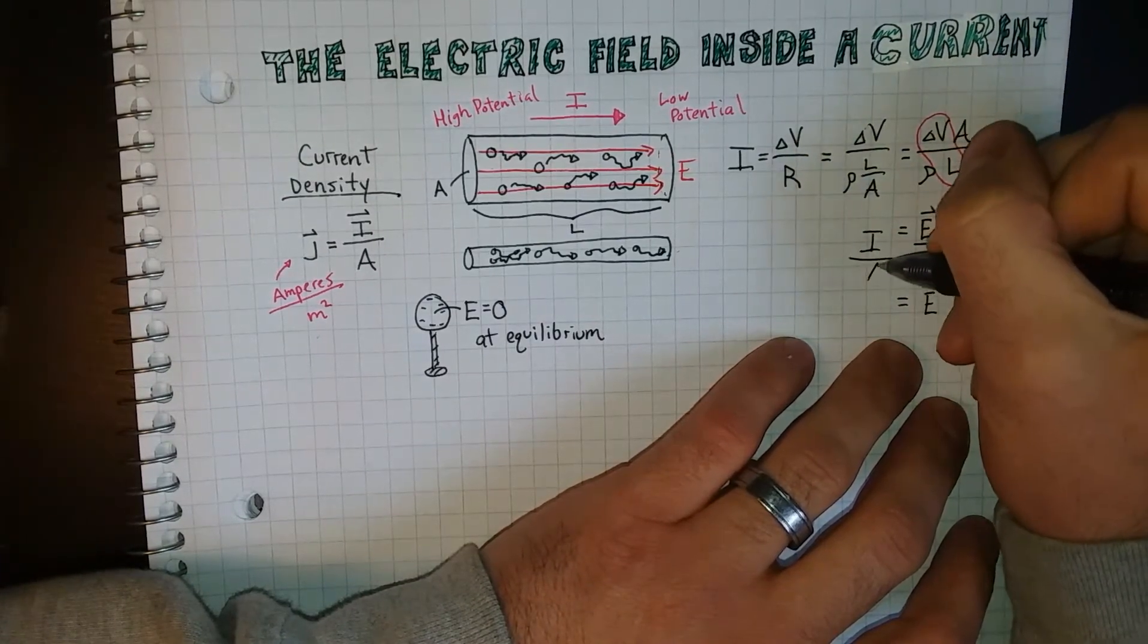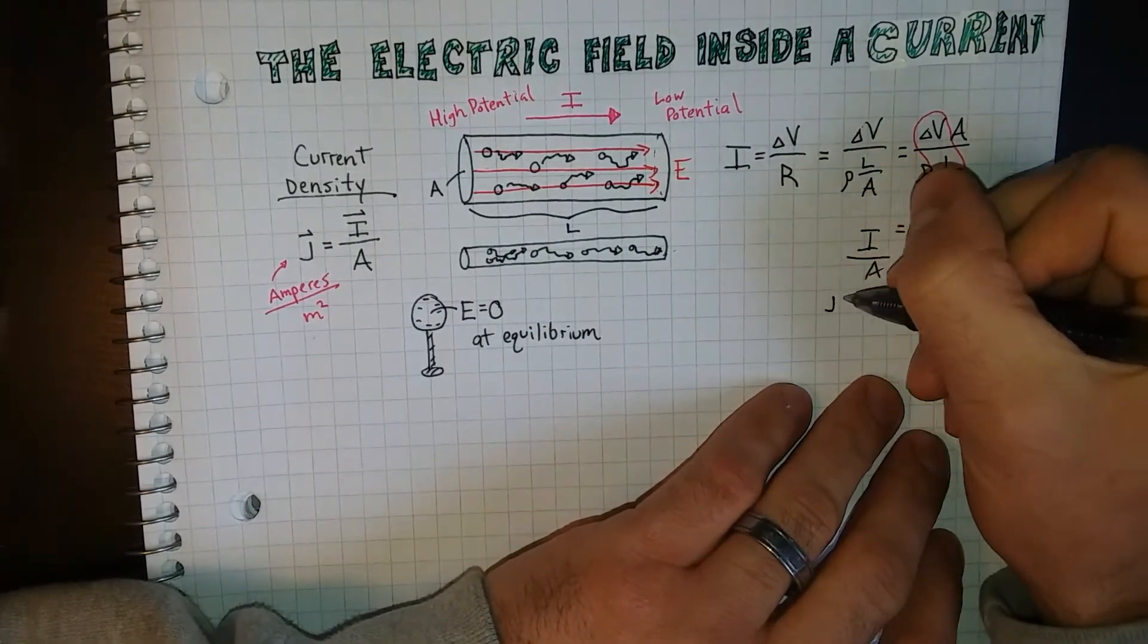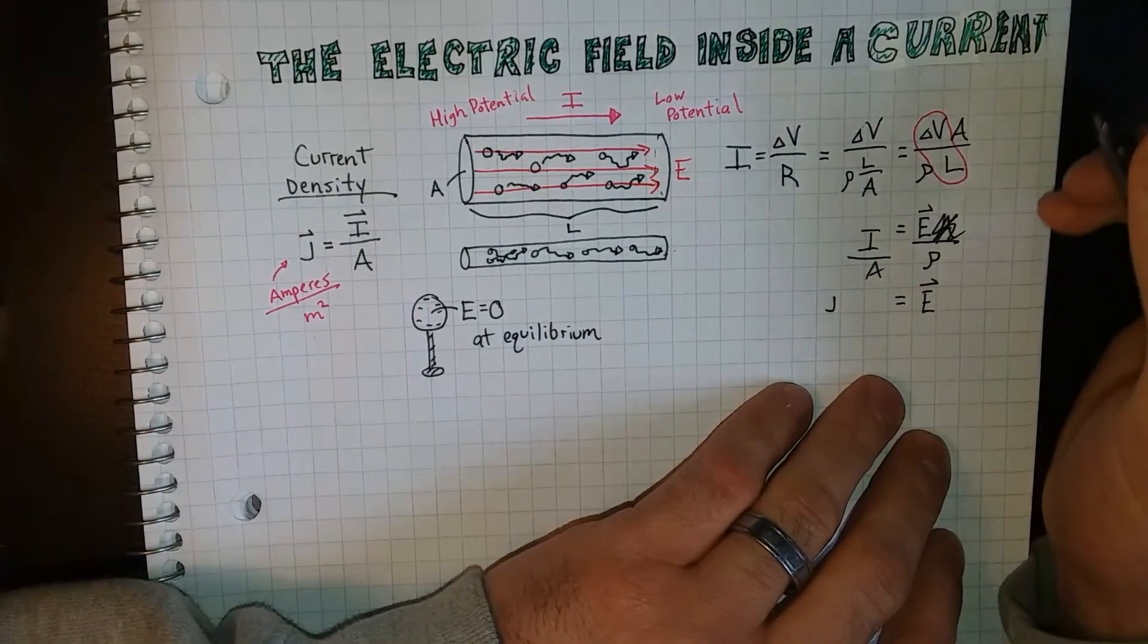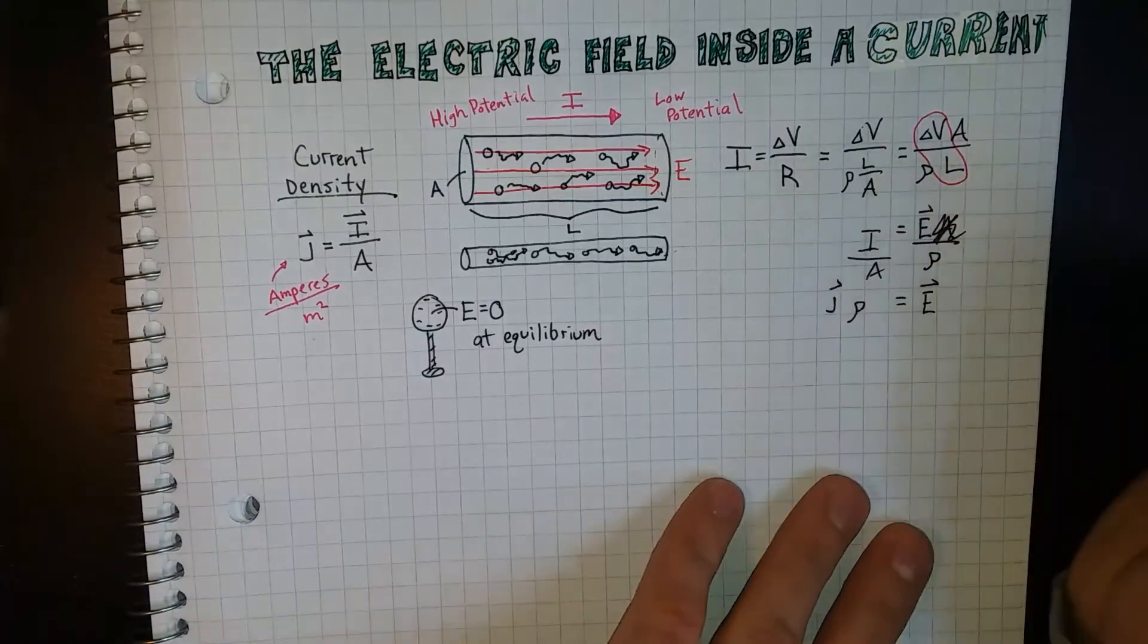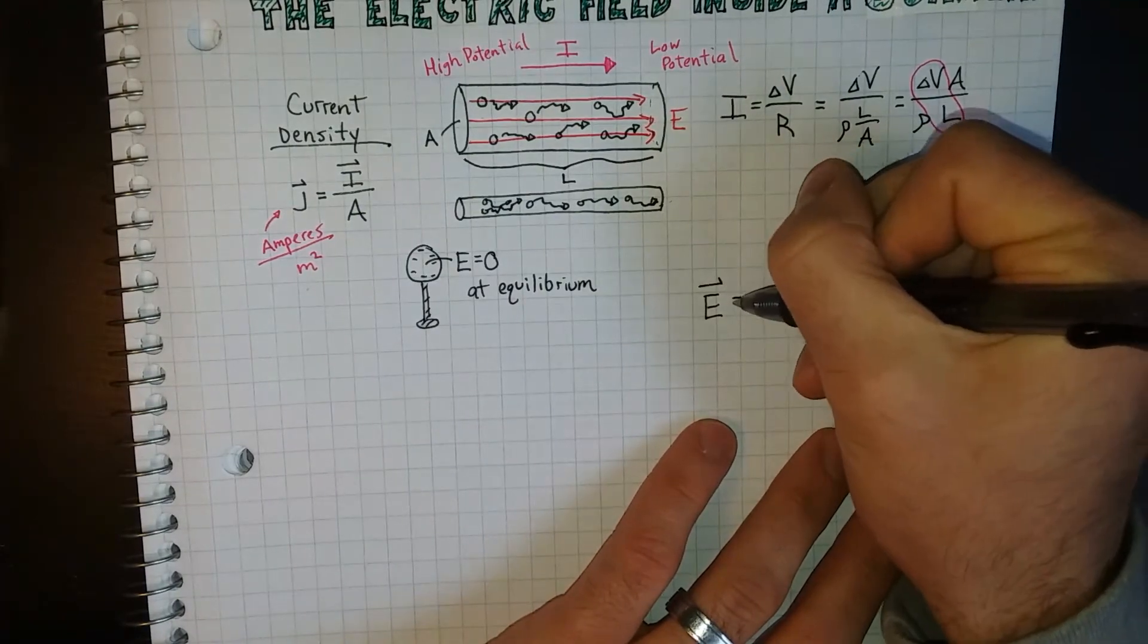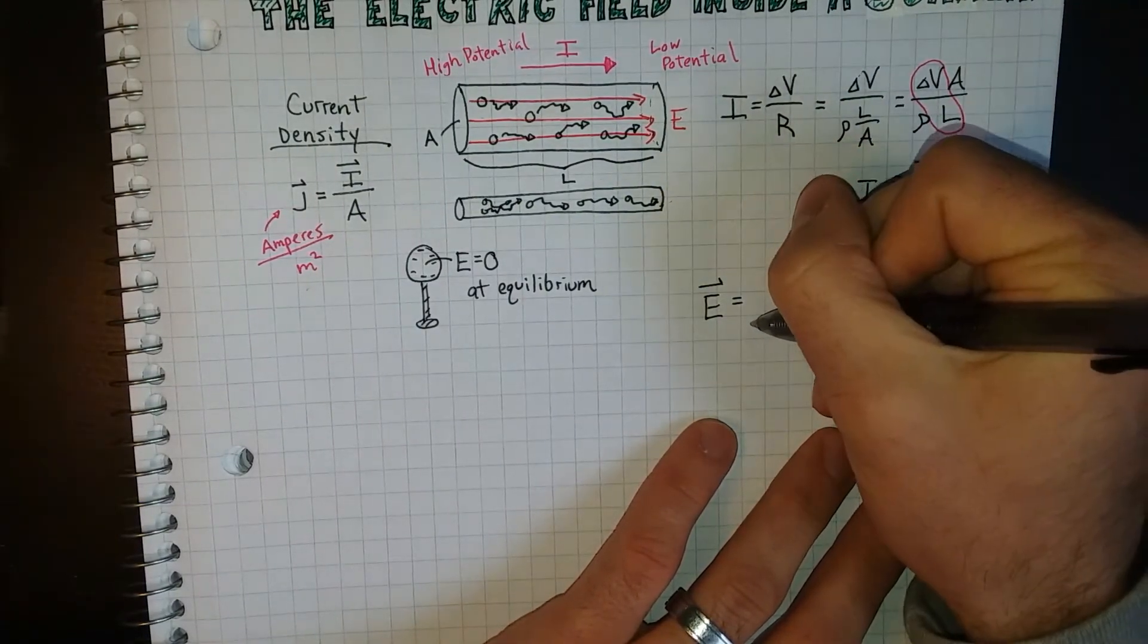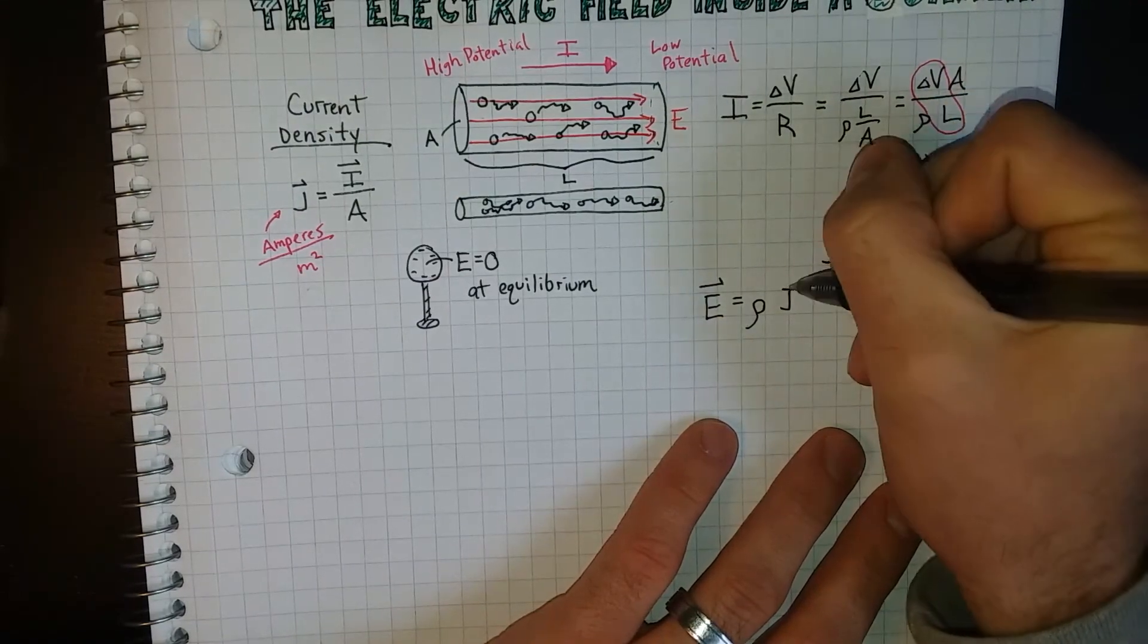If I divide this I over, cancel it out on that side, that's the current density, that term that we saw before. And then multiply it by rho, and there we go. Let me rewrite that for ease's sake. The electric field inside the conductor is equal to the resistivity of the material multiplied by the current density.